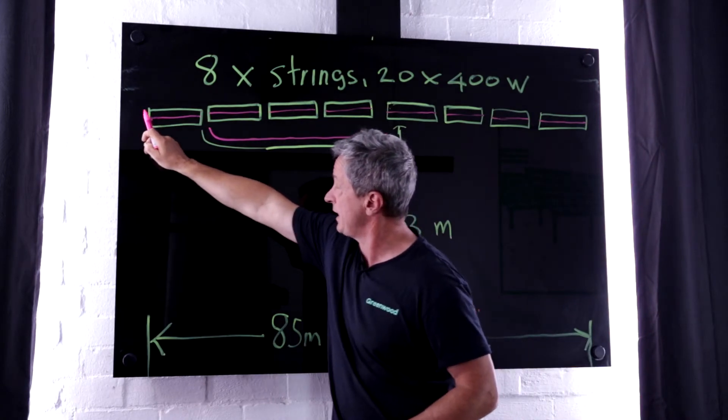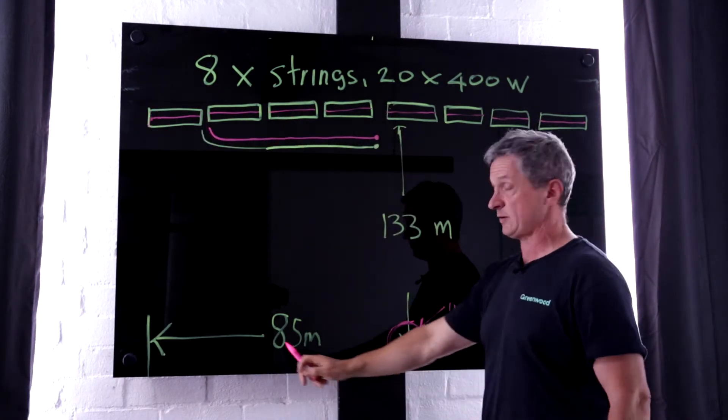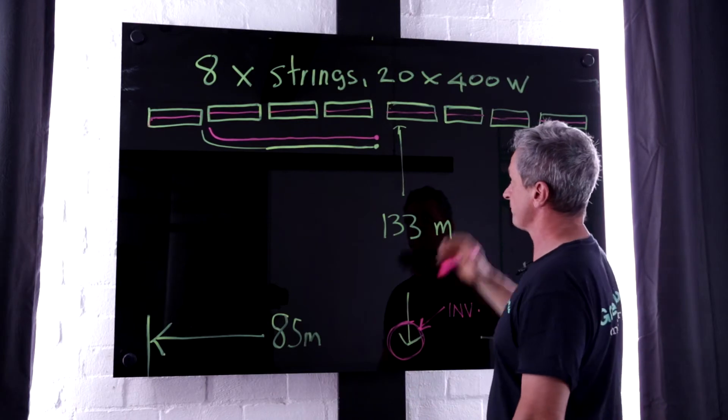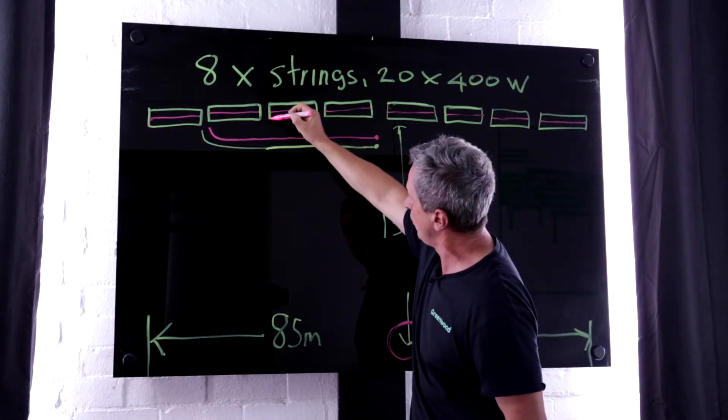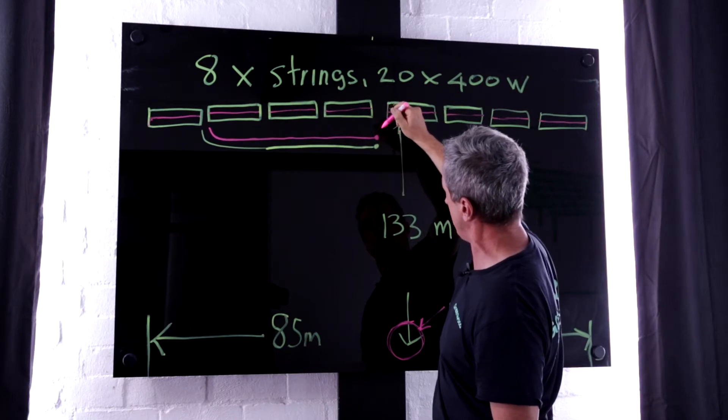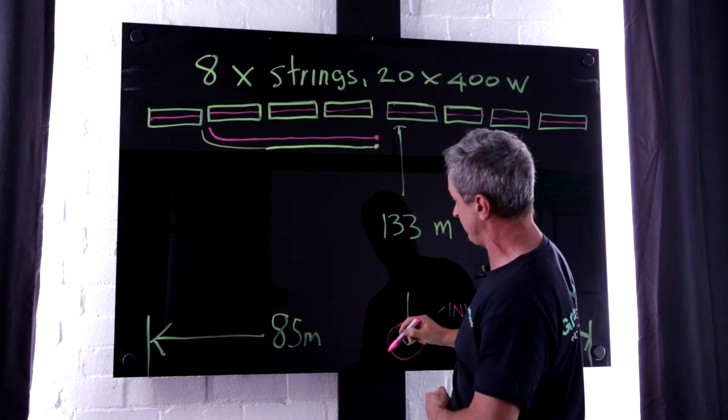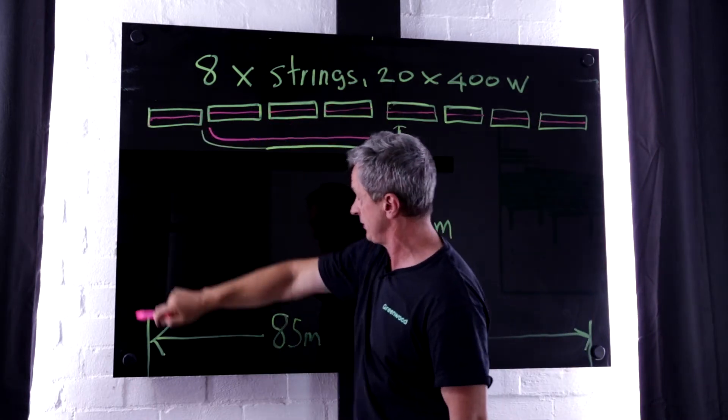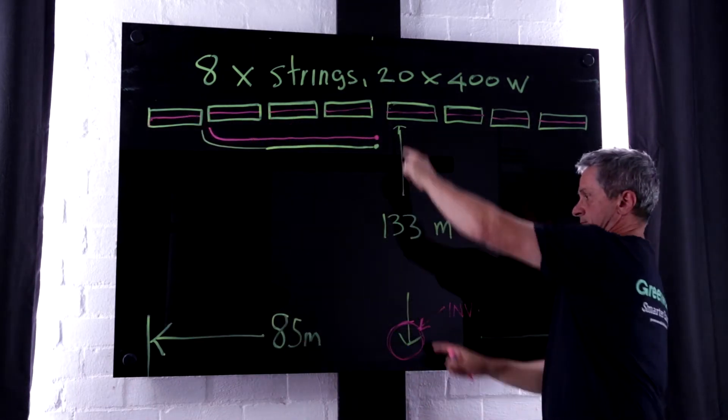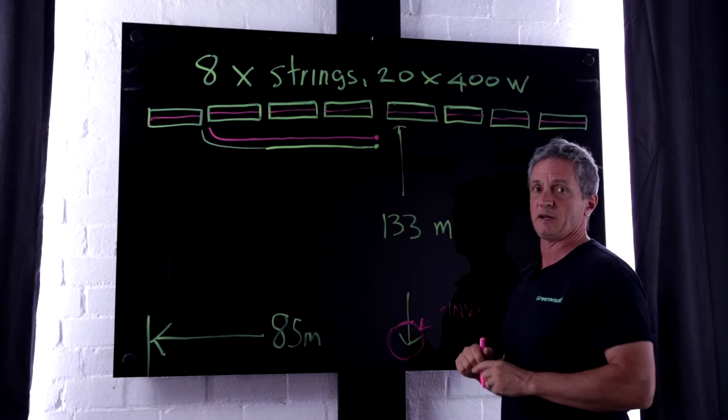The distance between here and here is approximately 85 metres. And what we are going to be doing is bringing all these strings to a central point and then coming down this final run, which is from here to here, 133 metres.